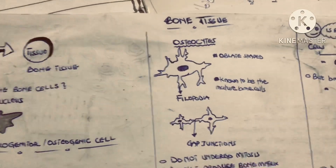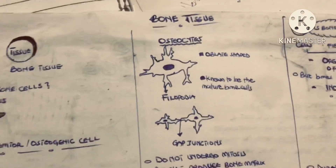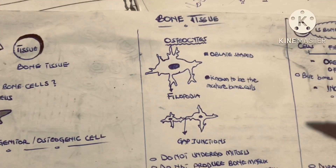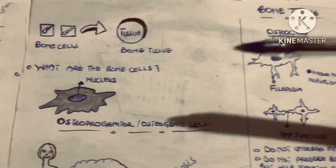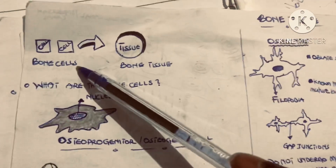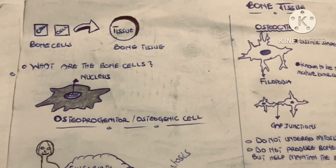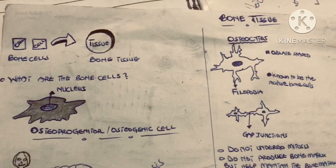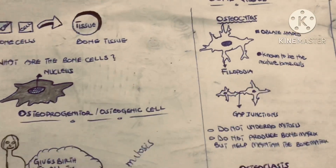Hello friends, it's your boy again. We want to look at this topic called bone tissue. It is a tissue, so it is going to be made up of cells. Bone cells come together to form bone tissue. Now the question is: what are the bone cells? We have four main types of bone cells, though some say we have five main types.